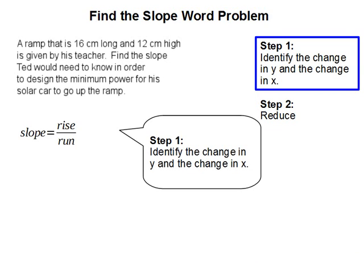Step 1. To find the slope, we must know the slope formula, and that is rise over run, and we are going to identify the change in y and the change in x.